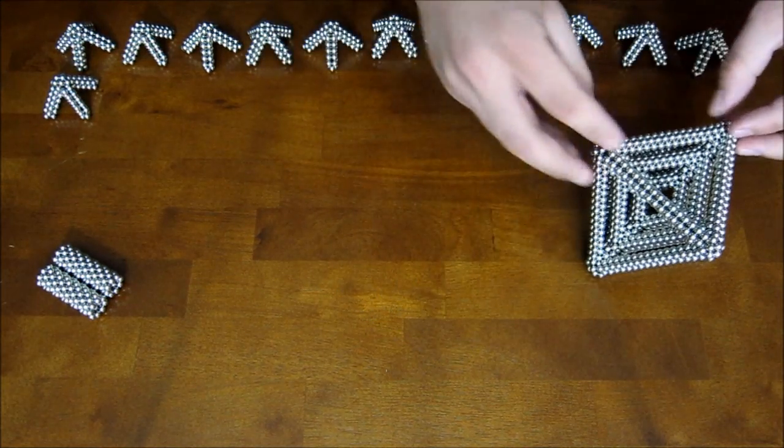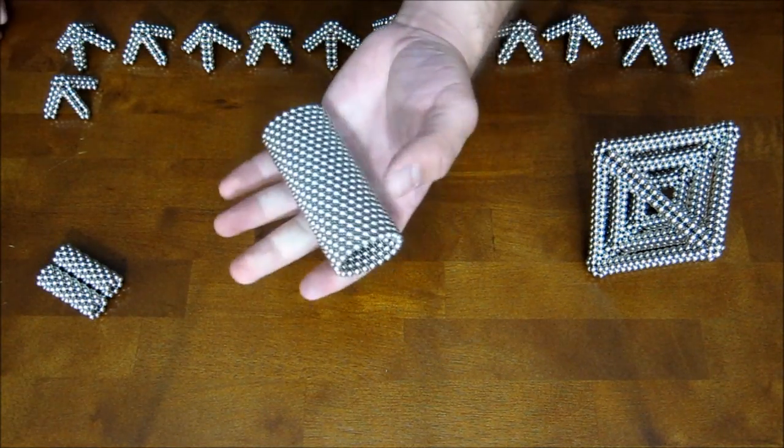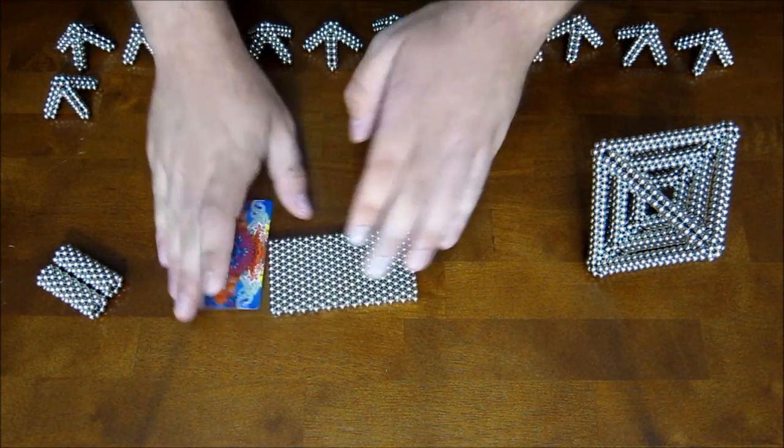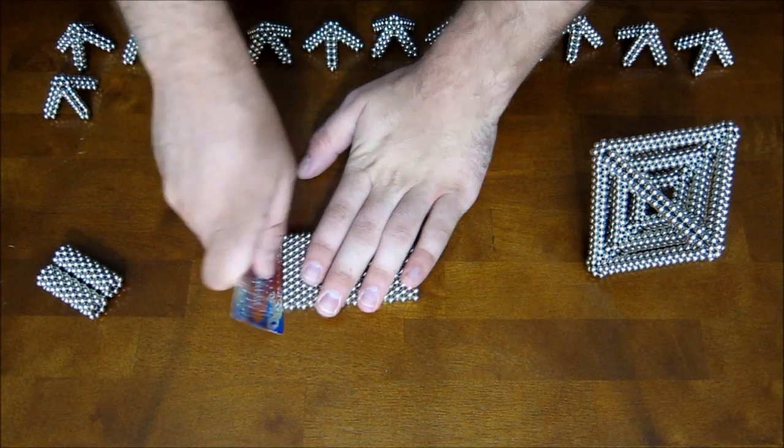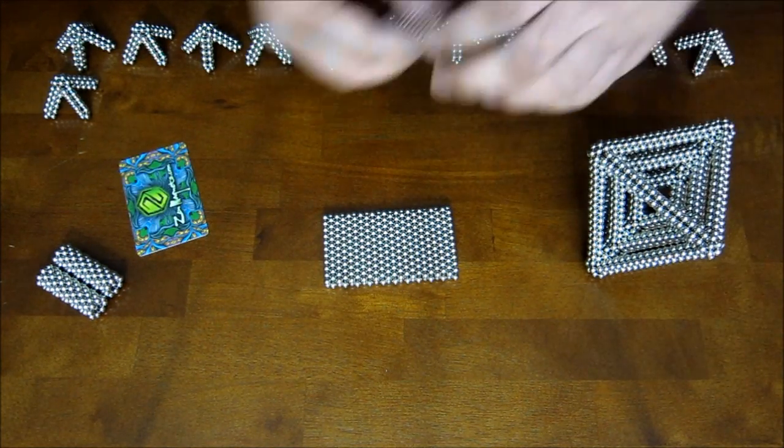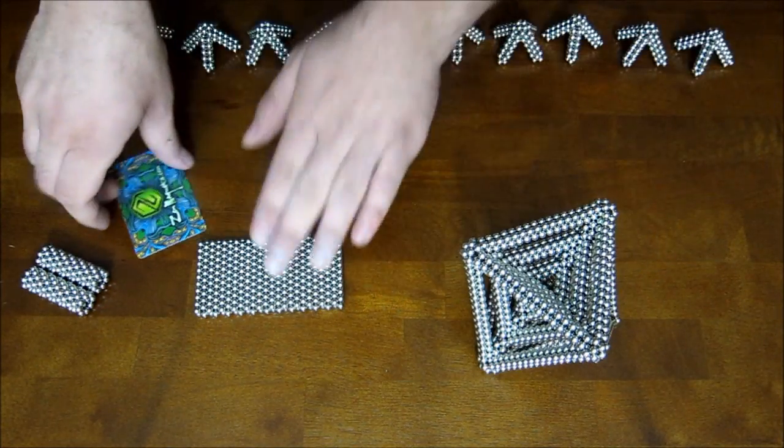Now for layer four, you want to use these stacked rings of 22. And you're going to use those as the connector pieces and they'll be a bit longer. But other than that, it's the exact same as what you just did for layer three. So go ahead and do layer four.